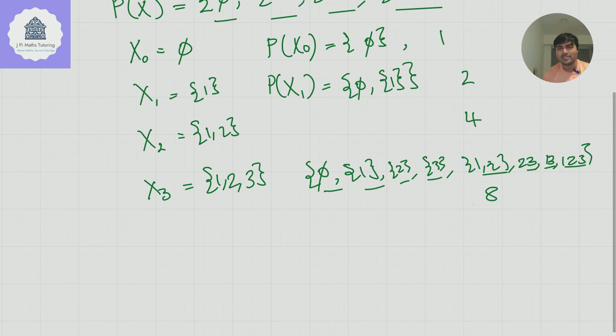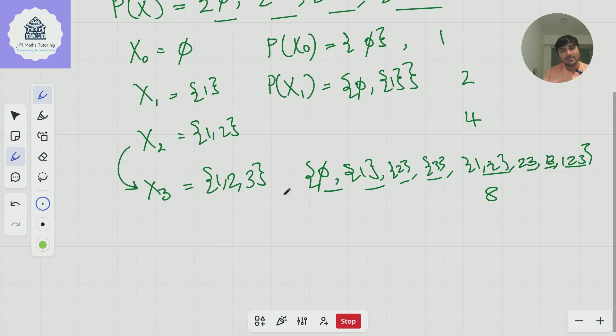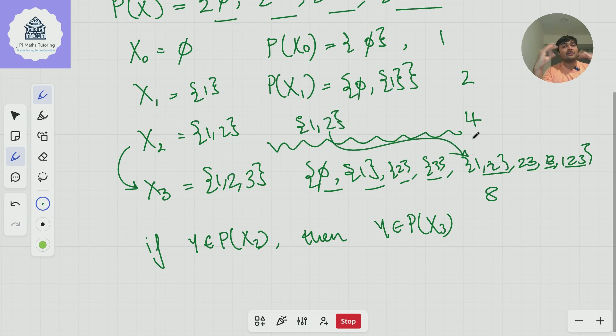But of course, again, this isn't a proof, but maybe there's some reason behind this that I can understand. Why is it that each time it's doubling? Oh, I can see why. And this is actually just one of many reasons that you can explain this with. But I can see, for example, going from X2 to X3, all I've done is I've introduced the number 3 into the set. So what I could do is any subset that was initially here that was in X2. So if, let's say, Y is in the set P(X2), then Y will be in the set P(X3). So for example, up here, we would have had the set 1, 2, and notice that that appears here. So any subset of the set 1, 2 will also be a subset of the set 1, 2, 3.